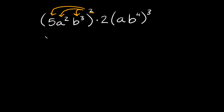So we can write this as 5 raised to the second power — we're going to raise everything to the second power. Then we have a squared raised to the second power, and then we have b cubed also raised to the second power.